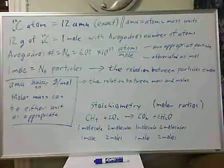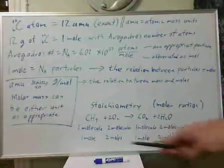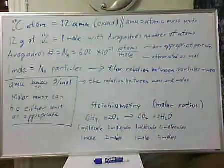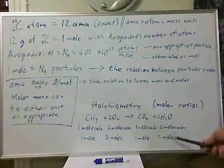We multiply these molecules by Avogadro's number, and we end up with one mole of methane will require two moles of oxygen to react. We will produce one mole of carbon dioxide and two moles of water.